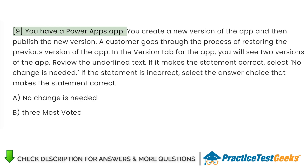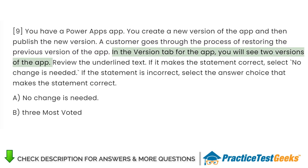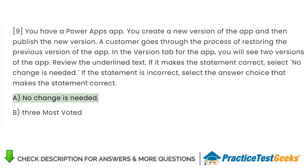You have a Power Apps app. You create a new version of the app and then publish the new version. A customer goes through the process of restoring the previous version of the app. In the version tab for the app, you will see two versions of the app. Review the underlined text — if it makes the statement correct, select No change is needed; if incorrect, select the answer choice that makes the statement correct. A. No change is needed. B. Three.